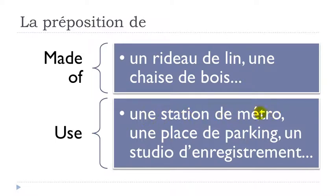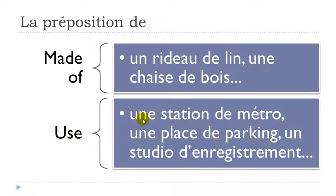De is also used for the purpose or use concept. For example: une station de métro — a metro station. Une place de parking — a parking space. French people use the word parking too, though it comes from English — just pronounce it the French way. And: un studio d'enregistrement — enregistrement means recording — a recording studio. Again, de contracts to d' before a vowel.